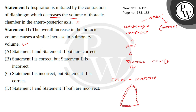The parietal pleura is attached to the thoracic wall. When it moves outward, the visceral pleura follows, and pulmonary volume increases. So Statement 2 is correct on its own merit.